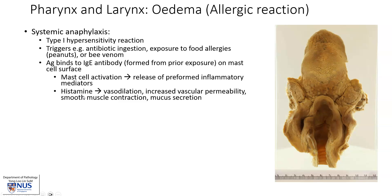Among the preformed mediators, we have histamine, which is a main player, and this gives rise to vasodilation, increased vascular permeability, smooth muscle contraction, and mucus secretion. Together, all these effects contribute to airway obstruction. For example, increased vascular permeability gives rise to edema and swelling, smooth muscle contraction causes bronchoconstriction, and mucus can plug up the airways.